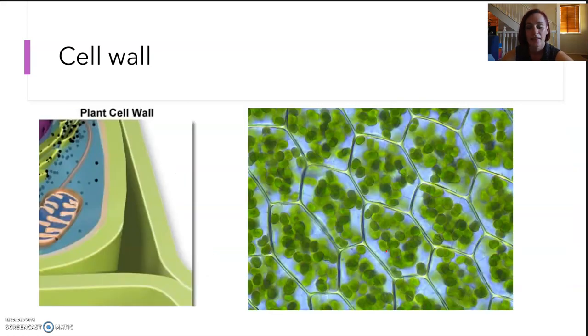And cell walls are found in plant cells, algae, fungi, some prokaryotes, and they lie outside the cell membrane. They protect, support, and maintain the shape of the cells. Plant cells can be quite rigid, which is a good thing. And they also prevent excess water uptake or loss.